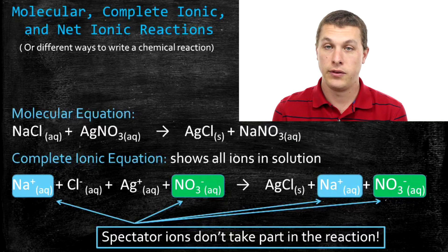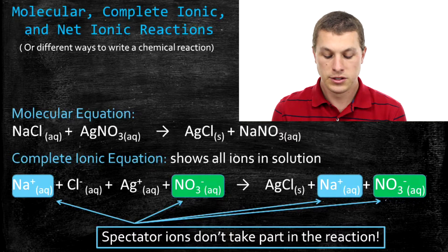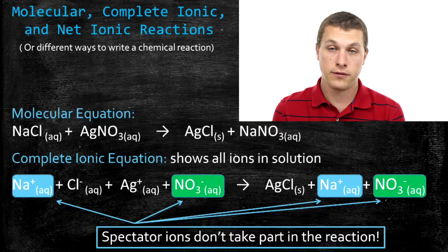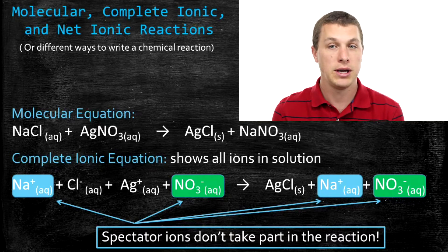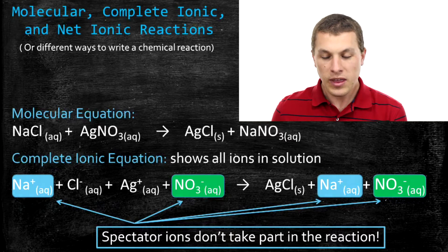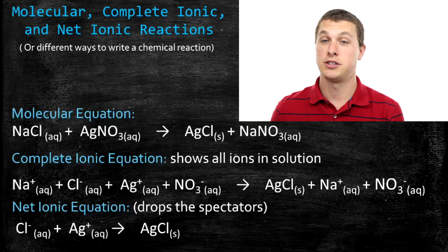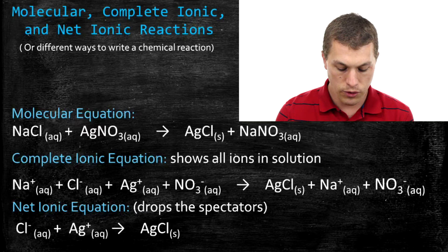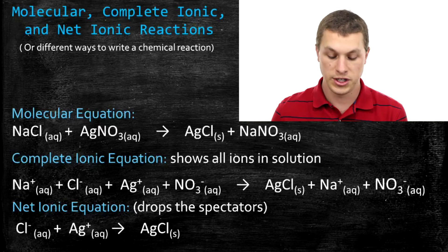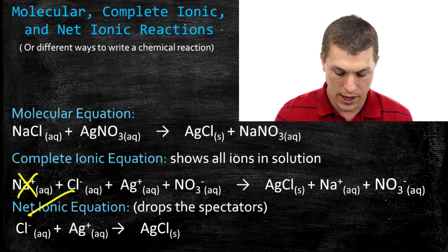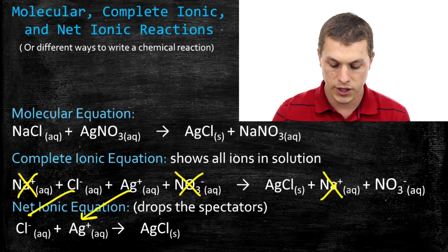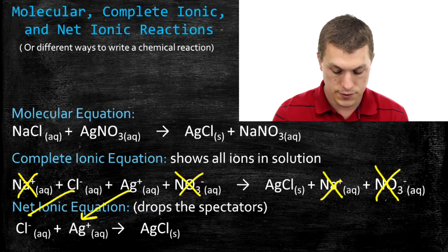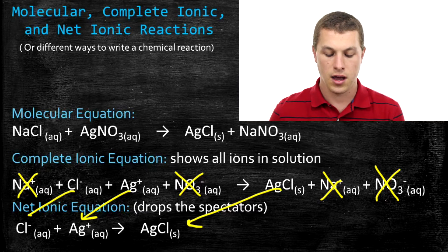Since spectator ions aren't taking part in the reaction, you might wonder why we write them. In fact, when you write the net ionic equation, you drop the spectator ions. Dropping spectator ions means you look for any ions that are on both the left and right side by themselves, and you just drop them, because they're not really changing. The net ionic equation cuts down to the bare minimum needed to express the change that's actually happened. Comparing the complete ionic to the net ionic equation, we drop sodium and nitrate — both spectator ions — and just bring down chlorine and silver.